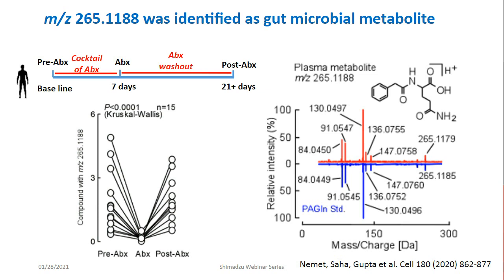Here are the data. As you can see, in all 4,000 subjects, phenylacetylglutamine levels in the fourth versus the first quartile were significantly associated with three-year MACE risk — major adverse cardiovascular event risk — defined as MI, stroke, or death. Those associations stayed significant even after adjusting for multiple traditional risk factors such as age, gender, smoking, HDL, LDL, triglycerides, blood pressure, and CRP. When we divided those 4,000 individuals into ones with and without diabetes, associations still stayed significant even in individuals without diabetes, while they were much stronger among individuals with diabetes. These observed associations suggest a potential effect of phenylacetylglutamine on platelet function and interaction with vascular matrix.